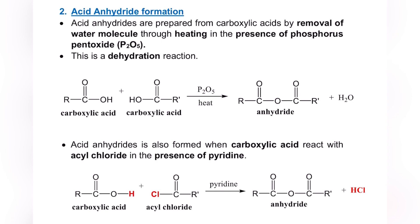Substitution of the OH group can also proceed through the formation of acid anhydride. Acid anhydride can be prepared from the reaction of carboxylic acid by removing water through heating and using phosphorus pentoxide, P₂O₅. Since it involves removal of water, the name of the reaction is dehydration. You have 2 carboxylic acid molecules — they can be the same or different. From one carboxylic acid you remove OH, and from the other you remove H. They combine, giving H₂O as the side product. Write P₂O₅ above the arrow and heat below.